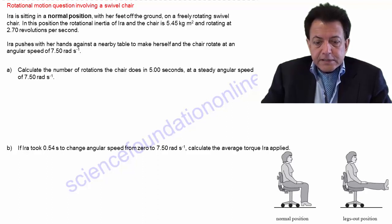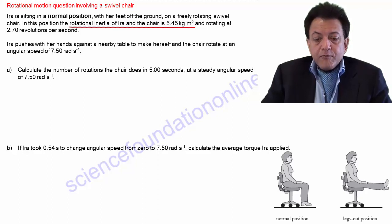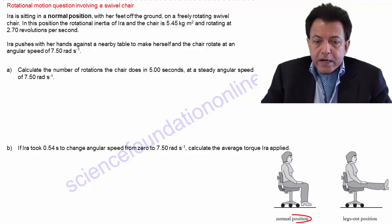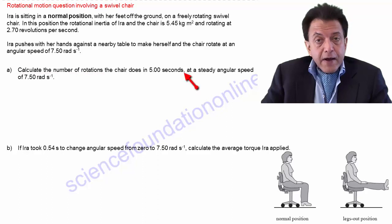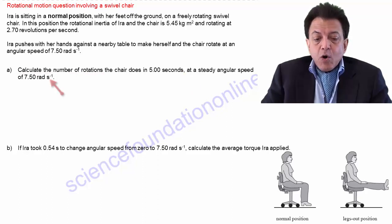It tells us the rotational inertia of Ira and the chair is 5.45 kilogram meters squared when in the normal position. Part A then asks us to calculate the number of rotations completed in 5 seconds at a constant angular speed of 7.50 radians per second.